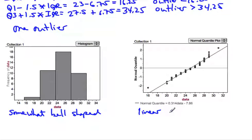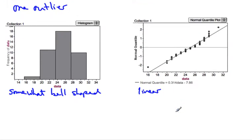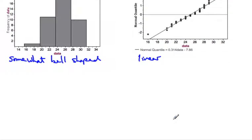We have a somewhat bell-shaped histogram, only one outlier, and a linear normal probability plot. This tells us that most likely we have a normal distribution.